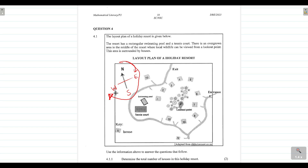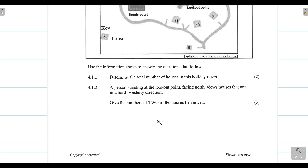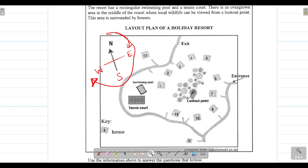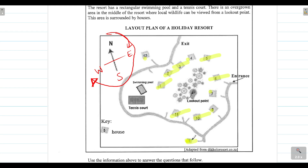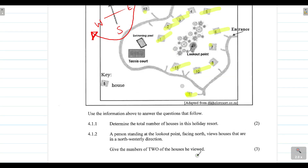Now we're ready to look at the questions. Question 4.1.1 asks us to determine the total number of houses in the holiday resort. You can count the numbers on the plan — going through: one, two, three, four, five, six, seven, eight, nine, ten, eleven, twelve. We can see that there are 12 houses in this holiday resort.